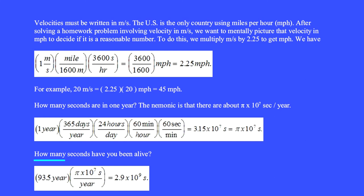How many seconds have you been alive? 93.5 years times pi times 10 to the seventh seconds per year equals 2.9 times 10 to the ninth seconds.